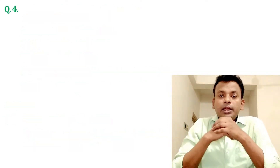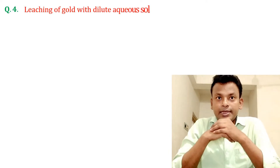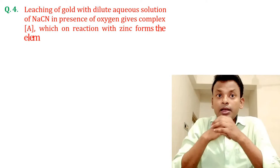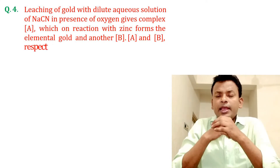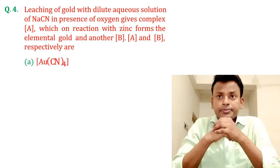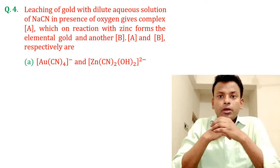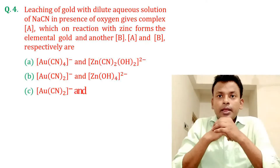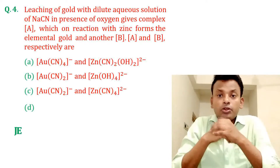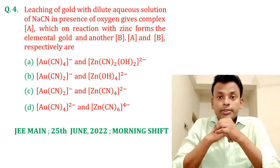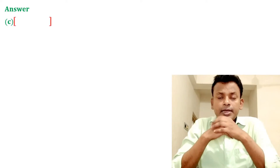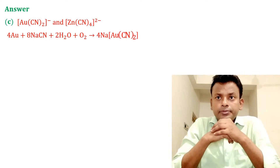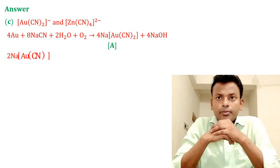Question number four: Leaching of gold with dilute aqueous solution of NaCN in the presence of oxygen gives complex A, which on reaction with zinc forms elemental gold, and another product is B. A and B respectively are option A, option B, option C, or option D. This question was set in JMN 25th June 2022 morning shift. Answer: Option C is the correct answer.